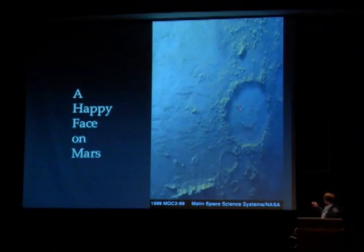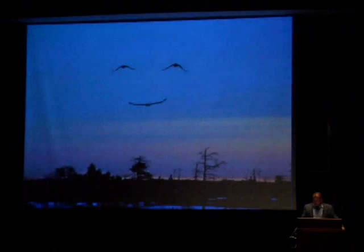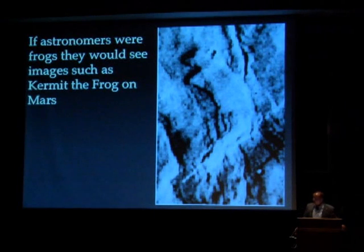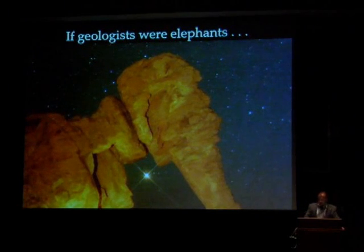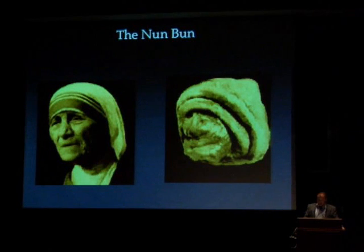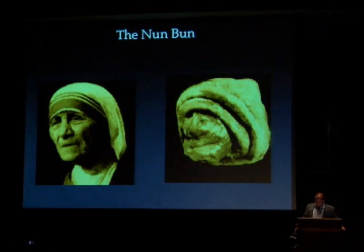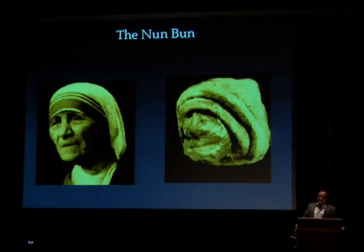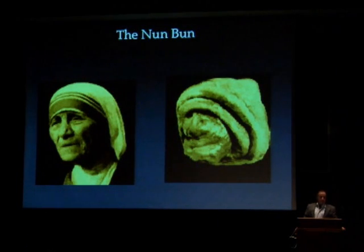Actually, there are happy faces all over Mars — only three data points needed. There's Kermit the Frog on Mars. But geologists were elephants, perhaps — they'd write eloquently about amazing rock formations like this outside of Las Vegas. There's a nun bun discovered by a baker in Tennessee — it's now a T-shirt you can get. I know because I have one. He used to charge people five bucks apiece to come see the nun bun until he got a cease-and-desist letter from Mother Teresa's lawyer. Charity is one thing, but...